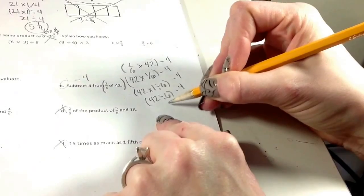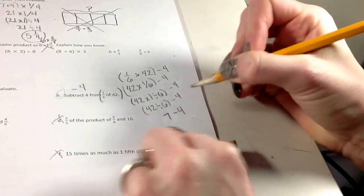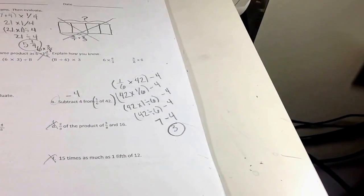42 divided by 6 is 7, minus 4. 7 minus 4 is 3. So my answer would be 3 for that one.